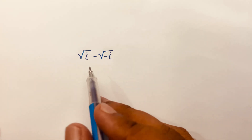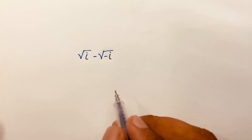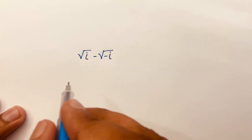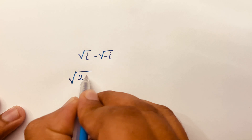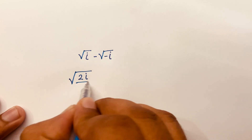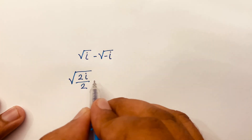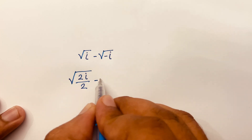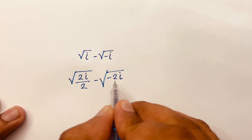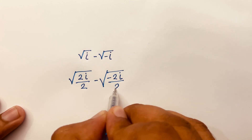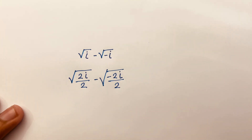How to solve square root i minus square root minus i. First of all, I can say it will be square root of 2i over 2. Look, the 2 cancels. So we find out again i. Minus square root of minus 2i over 2. Again, the 2 cancels. So we find out here is minus i.